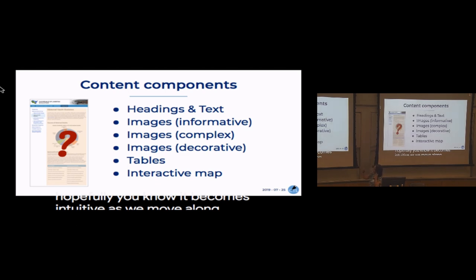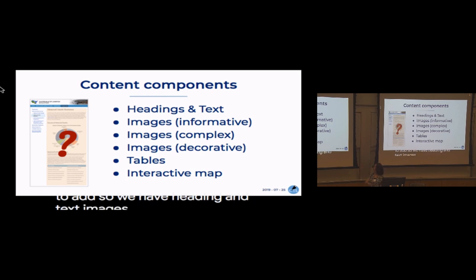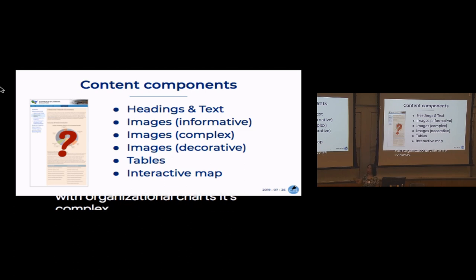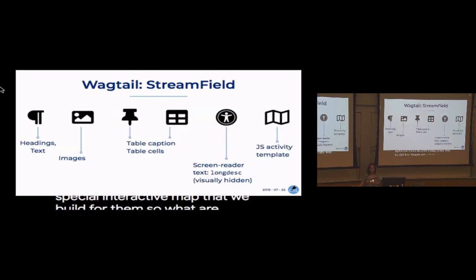We have content components identified from the old website: headings and text, images — informative meaning the image provides information, complex graphs and organizational charts, and decorative images like a photo of a building that just breaks up text without adding content value. We have tables with headers and columns. And then we have a special interactive map that we built for them.